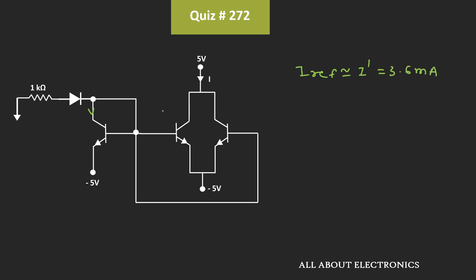And as I said, almost the same current will also flow through the collector of these transistors. That means, the current through the collector of these two transistors will also be equal to 3.6mA. That means, this current I will be equal to 2 times I reference, which is equal to 7.2mA.